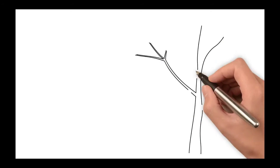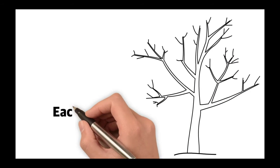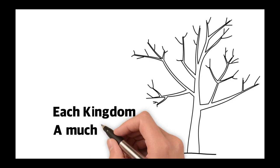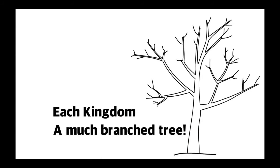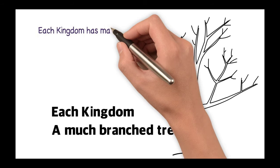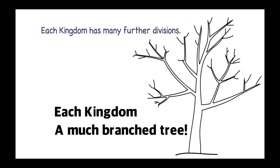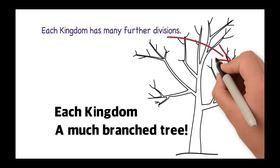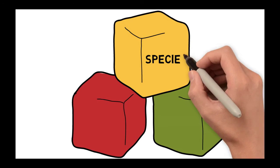When we consider classification, we're going to imagine that each of those five kingdoms is a much-branched tree, and each branch on that tree represents the great diversity of organisms in that particular kingdom — you could imagine all the particular plants in the plant kingdom. The most basic unit of classification is the species.